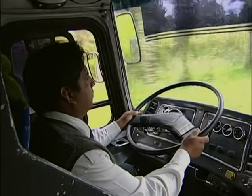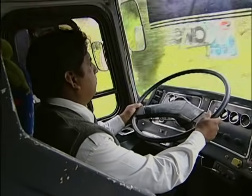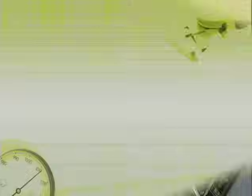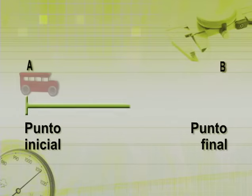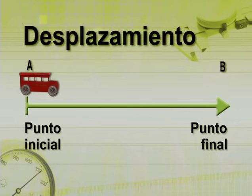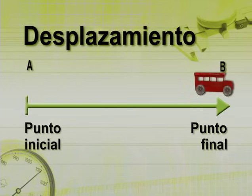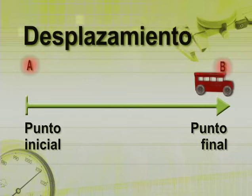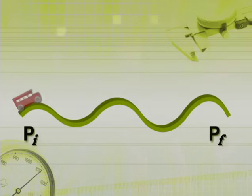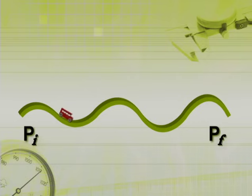Cuando vamos sobre la carretera, podemos considerar tanto el desplazamiento del camión como su trayectoria. Si medimos en línea recta el cambio de posición de nuestro camión desde el punto de referencia —en este caso el poblado A— hasta la posición final del recorrido, o sea el poblado B, sin importar la trayectoria, podemos decir que nos desplazamos del poblado A al poblado B. En este desplazamiento, la dirección del vehículo donde viajamos se modifica de acuerdo con las curvas del terreno, conformando así la trayectoria del móvil.